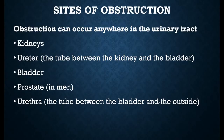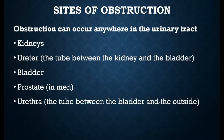The sites of obstruction — obstruction can occur anywhere in your urinary tract. That may include both your kidneys, your ureters, your urinary bladder. In men, it can also affect the prostate glands and urethra.